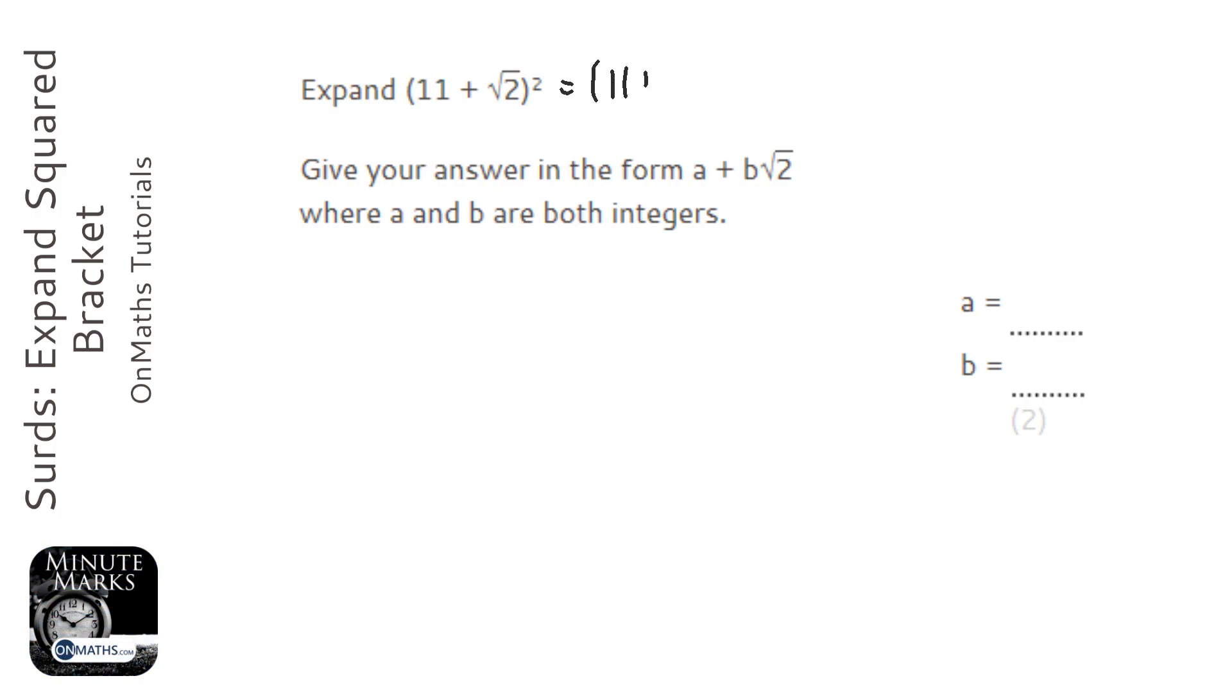So the first thing I do with this is write the bracket out twice. And if you don't do that you will probably get it wrong, because what you'll probably do is square the 11 and square the root 2, but that's not going to give us the full answer.